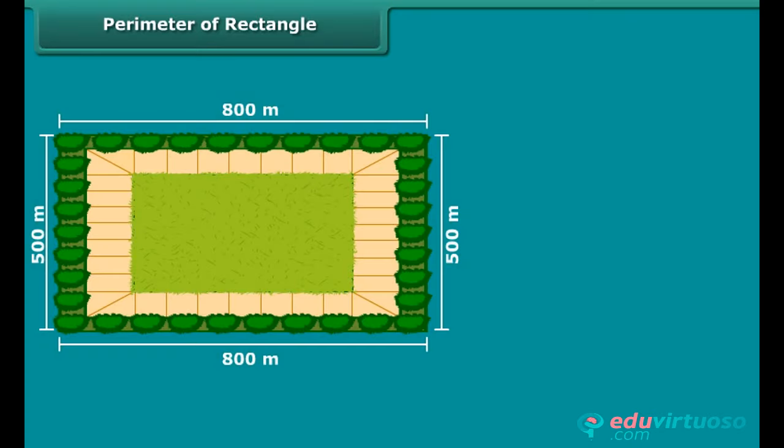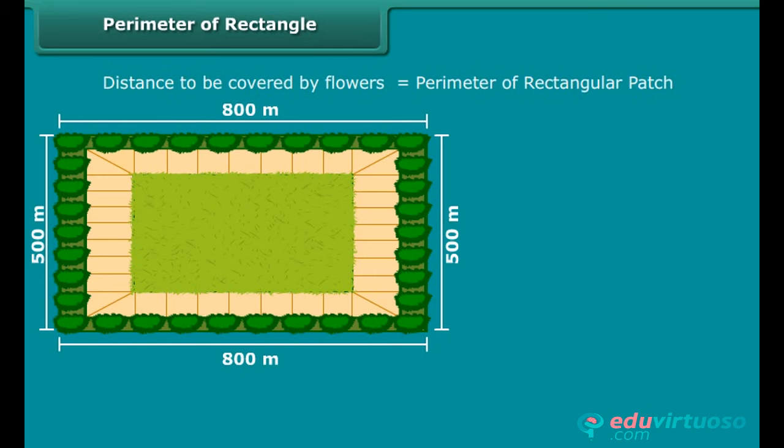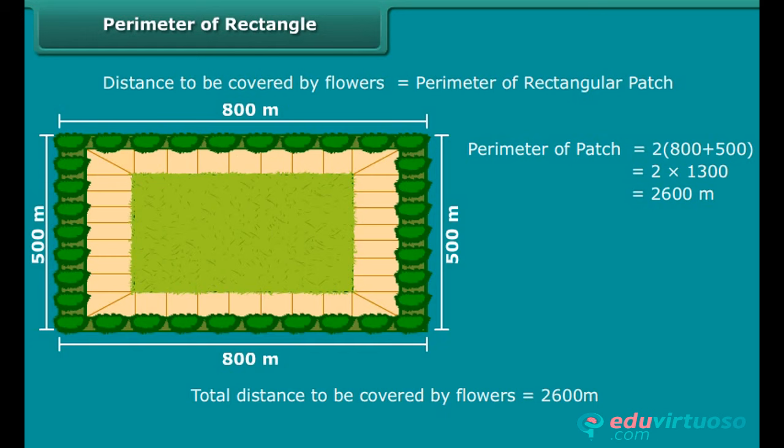We wish to plant flowers on all sides of a rectangular patch of land whose length is 800 meters and breadth is 500 meters. Calculate the total distance to be covered by flowers. The distance to be covered by flowers will be equal to the perimeter of the rectangular patch. The perimeter of the rectangular patch is 2600 meters. Therefore, the total distance to be covered by flowers is 2600 meters.